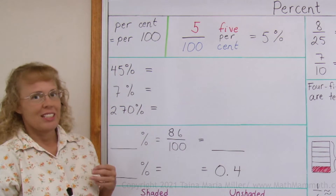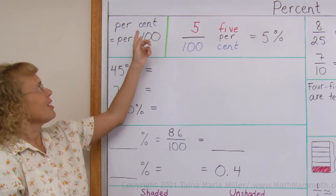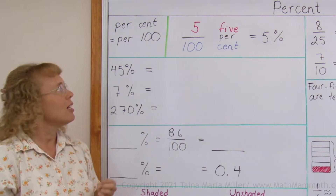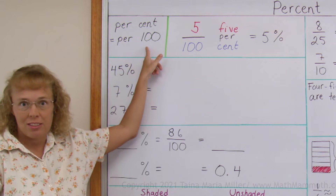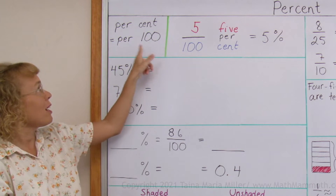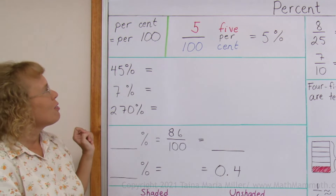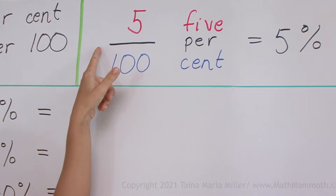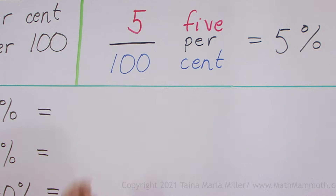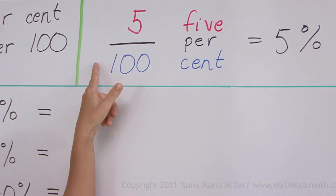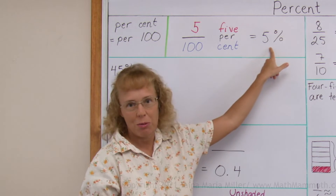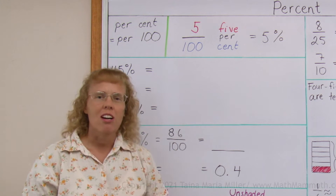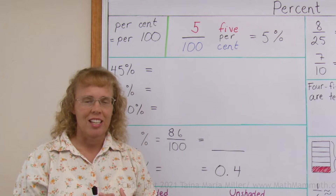The word percent — think of it as 'per cent.' The word 'cent' comes from a Latin word meaning 100. So this actually means per 100, or division by 100. For example, if I have 5%, it means 5 divided by 100, which is the fraction 5 hundredths. So 5% is the fraction 5 hundredths. Percentages are hundredth parts — they are just fractions.